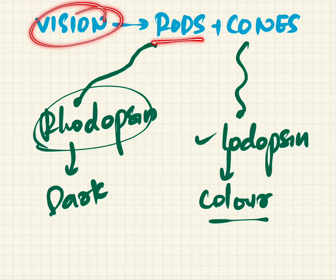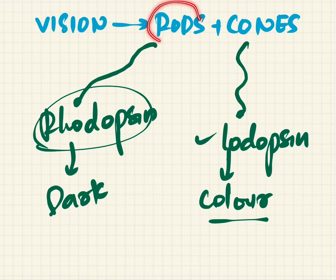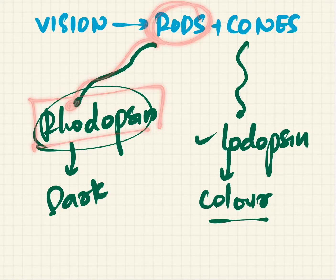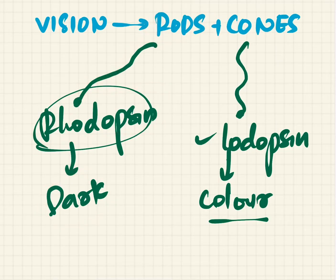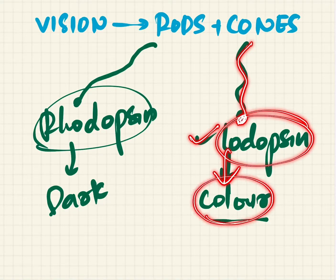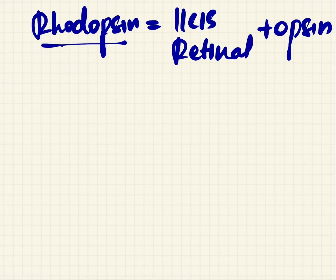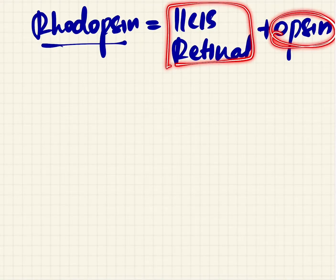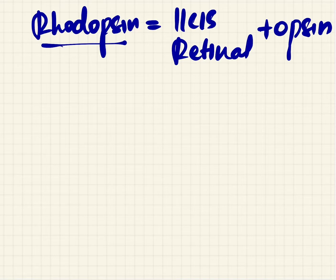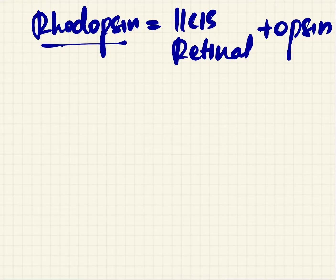Vision is mainly caused by the rods and cones present in the retina. The rods have the pigment rhodopsin, which is responsible for dark and light vision, whereas the cones have the pigment iodopsin, which is responsible for color vision. Rhodopsin is a conjugated protein of lewincis retinol and opsin.